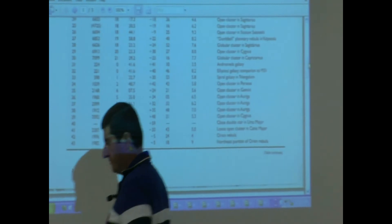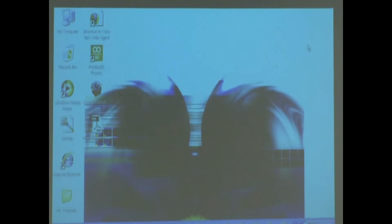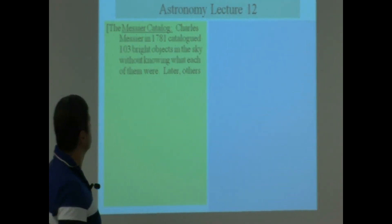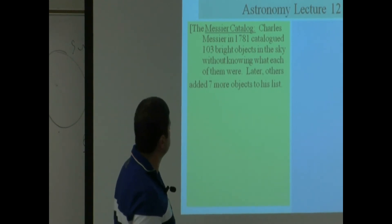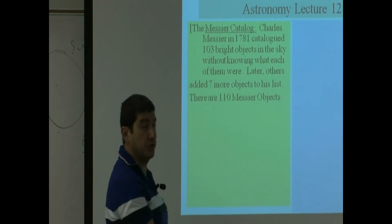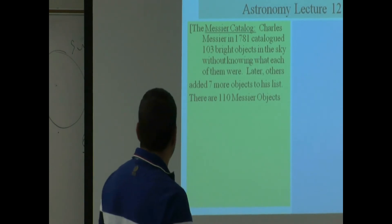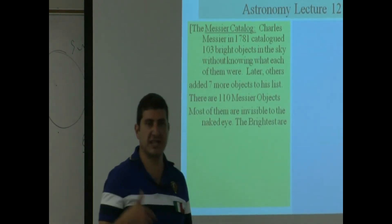So let's finish with that page of the notes and then we'll do the rest of the pages on Wednesday. So let's go here, lecture 12. So Charles Messier in 1781 cataloged 103 objects without knowing what each of them were. Later others added seven more. There are 110 Messier objects now.